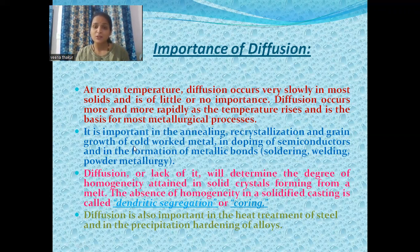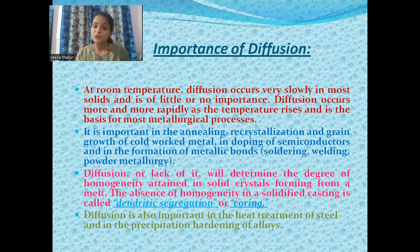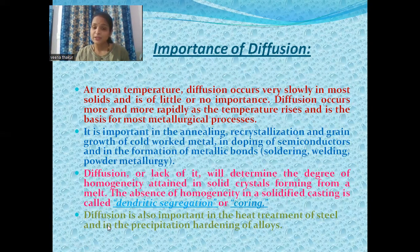The second importance of diffusion is that it is important in the annealing, recrystallization, and grain growth of cold-worked material, in doping of semiconductors, and in the formation of metallic bonds like soldering, welding, and powder metallurgy. The third importance is that diffusion will determine the degree of homogeneity attained in solid crystals forming from a melt. The absence of homogeneity in a solidified casting is called dendritic segregation. The fourth importance is that diffusion is also important in the heat treatment of steel and in the precipitation hardening of alloys.